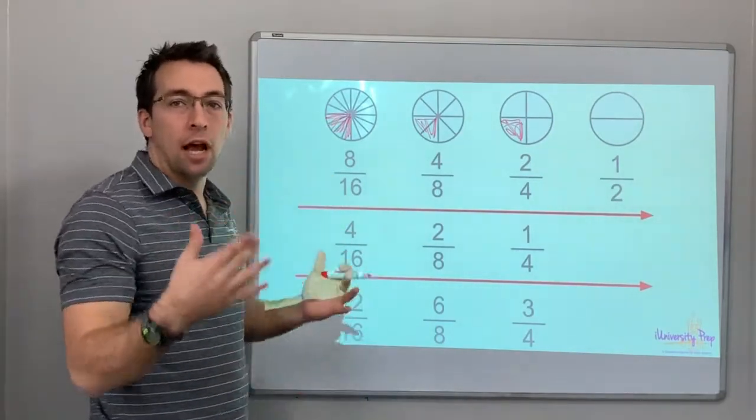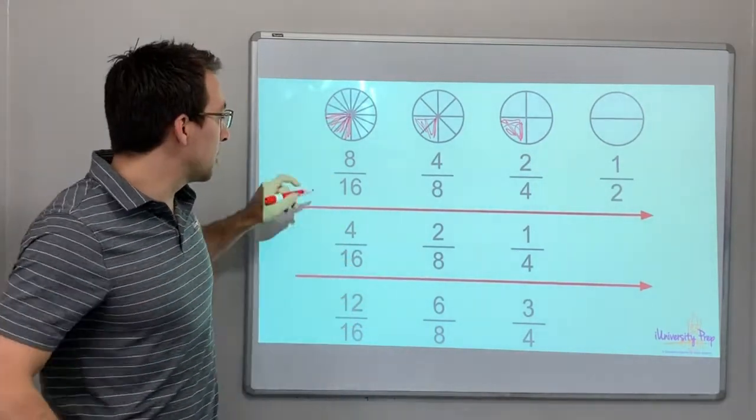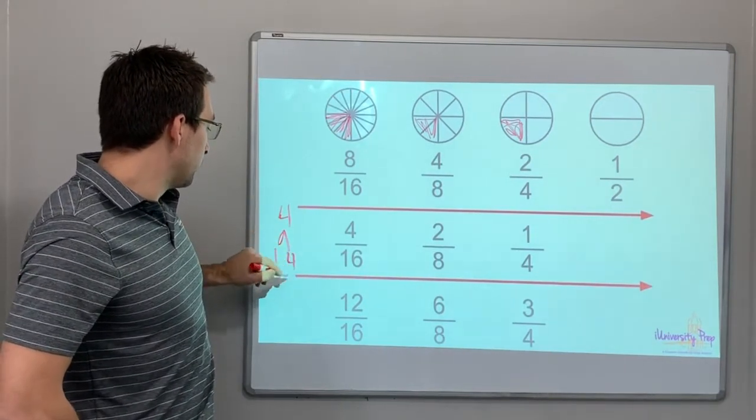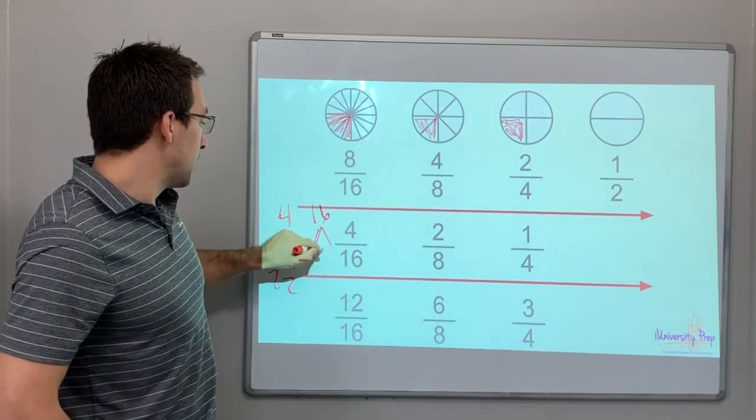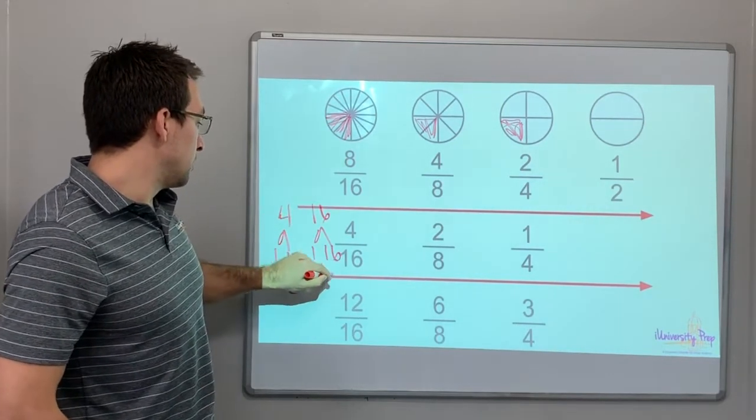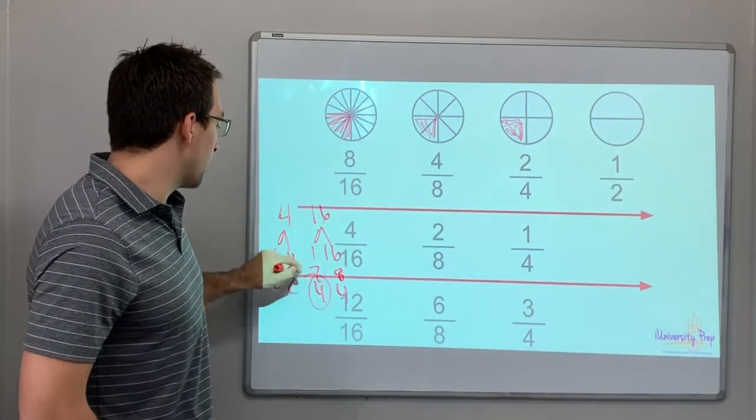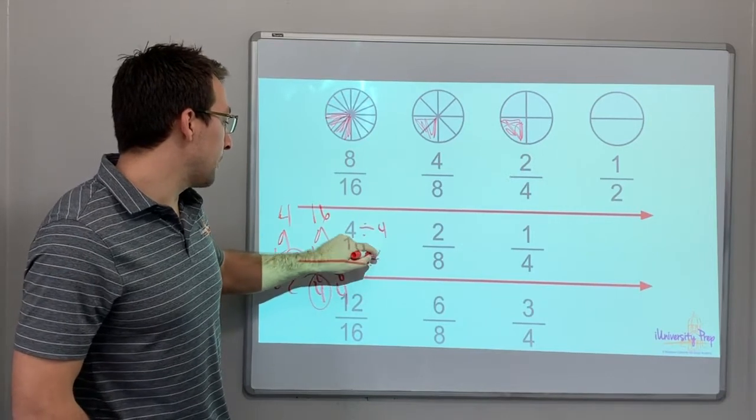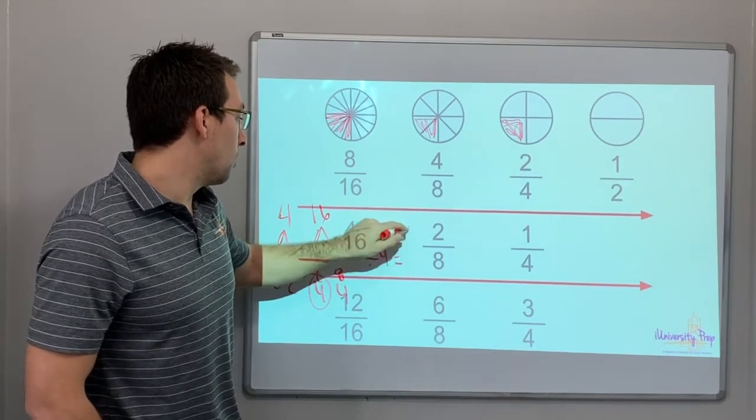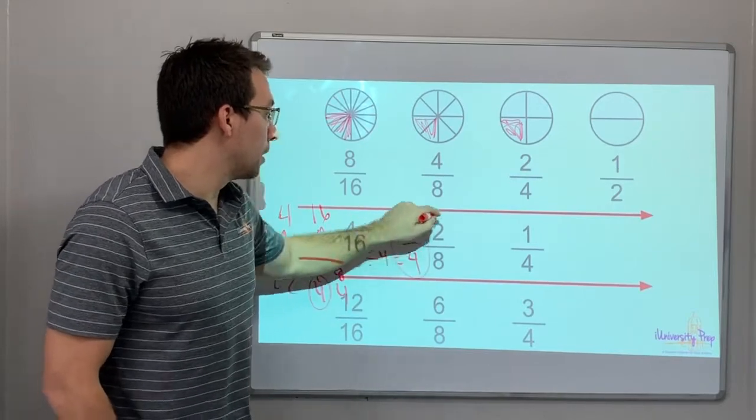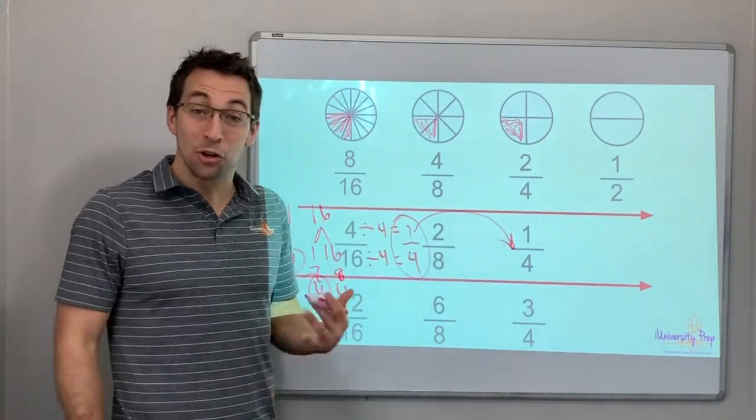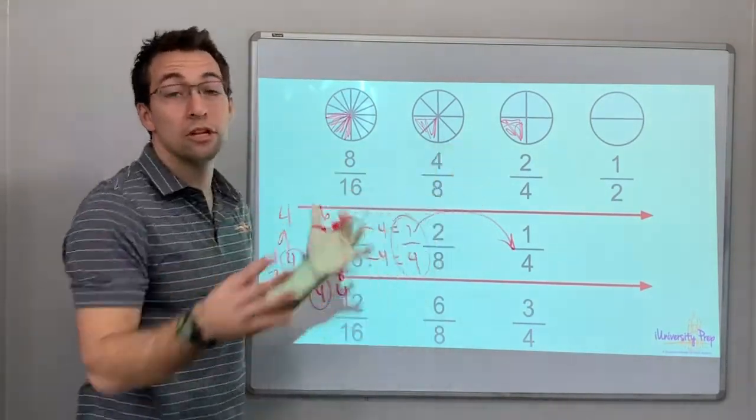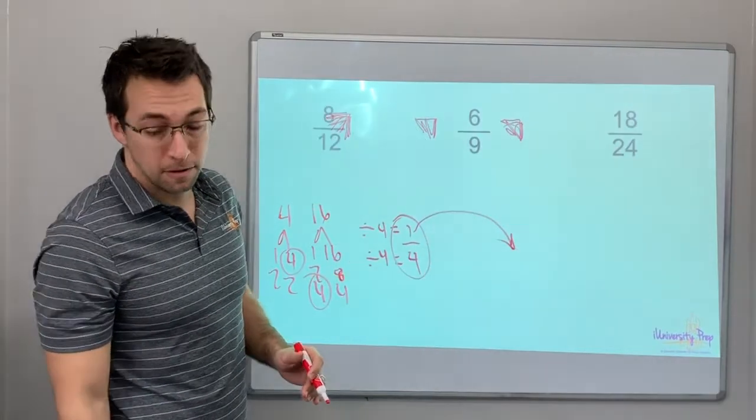Greatest common factors help us divide, right? So 4. 1 times 4, 2 times 2. 16. 1 times 16, 2 times 8, 4 times 4. 4 is our greatest common factor. 4 divided by 4, 16 divided by 4 equals 1 fourth. Isn't that cool? Greatest common factor. We have to know our factors, and that will help us reduce fractions.